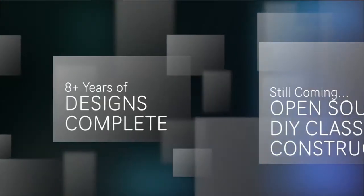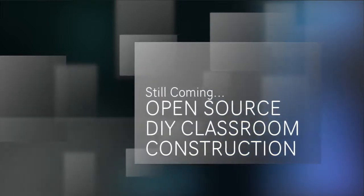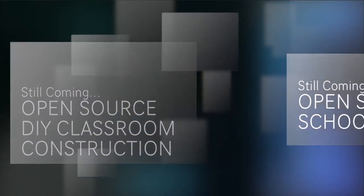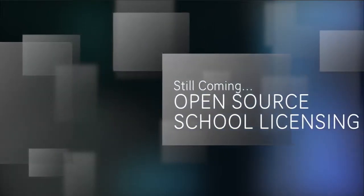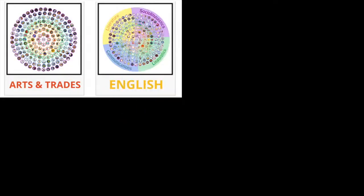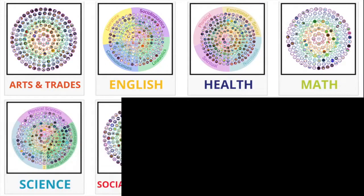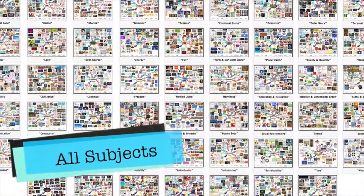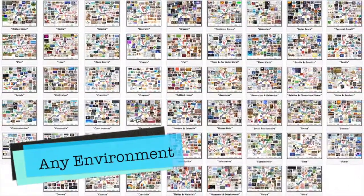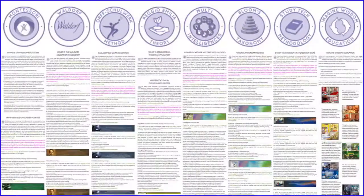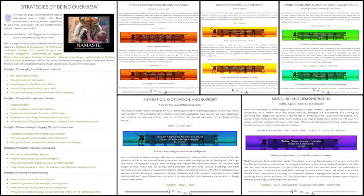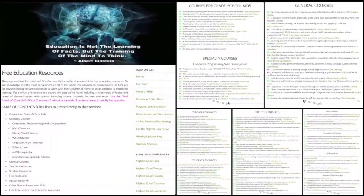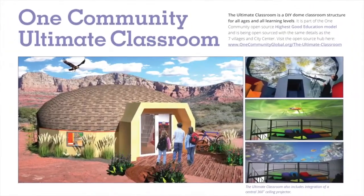With eight years invested in designing it, this component of One Community is pretty much complete until we move onto the property. Completed sections include comprehensive subject outlines covering arts and trades, English, health, math, science, social sciences, technology and innovation, and values. Also 52 weekly theme lesson plans covering all subjects, all learning levels and ages, usable in any learning environment. Twelve detailed and progressive curriculum outlines are complete, summaries and integration of all the best-known alternative education programs including Montessori, Waldorf, ORF, and RAGIO, plus leadership skills, collaborative assessment formats, a global online free education resource hub, classroom design, and more.